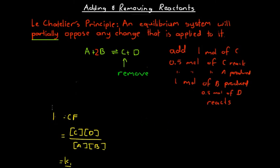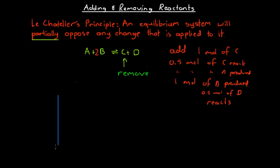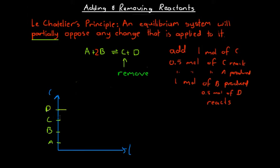If we draw a graph of concentration versus time — concentration on the vertical axis and time on the horizontal axis — and we say that we have initial concentrations of A, B, C, and D all constant, then if we remove some of substance C, there's a quick drop in its concentration. The system then reacts to this by partially opposing the change and producing some more C. However, it doesn't produce enough to restore C to its original level — the concentration of C increases but remains lower than its initial value.